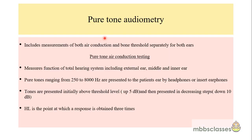Pure tone audiometry includes measurement of both air conduction and bone conduction hearing thresholds separately for right and left ears. Air conduction threshold testing measures the function of the total hearing system including the external ear, middle ear, and inner ear. Pure tones ranging from 250 to 8000 Hz are presented via headphones or insert earphones. The tones are initially presented above the threshold by 5 dB, then decreased in 10 dB steps, and the hearing threshold is the point at which a response is obtained three times.